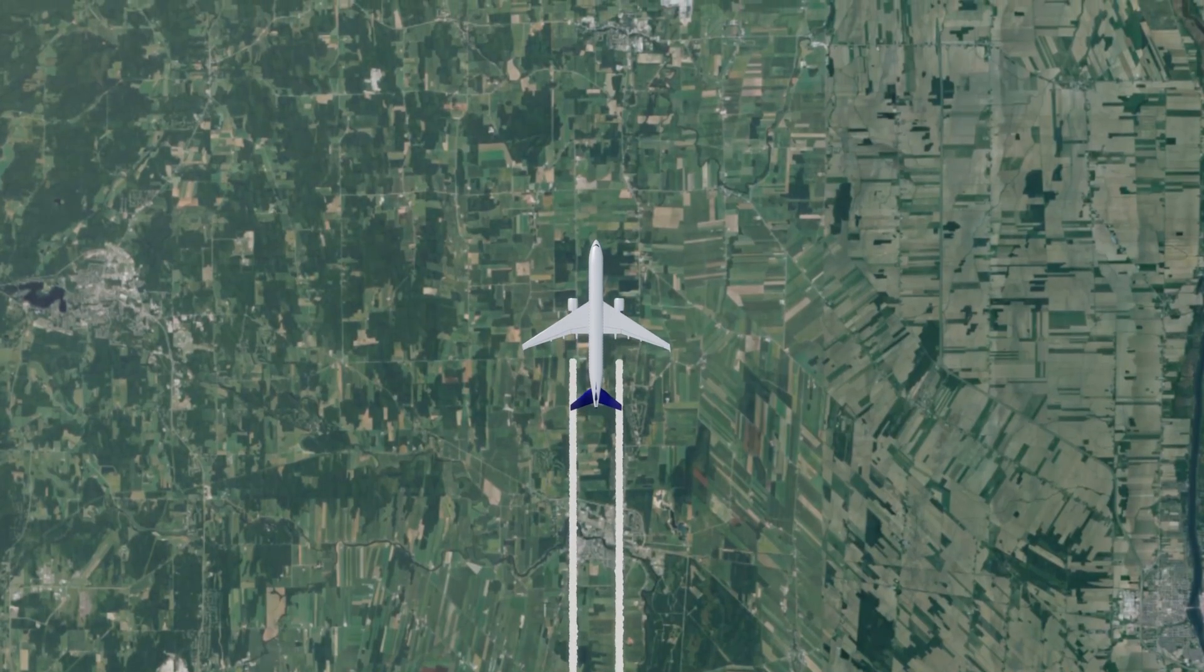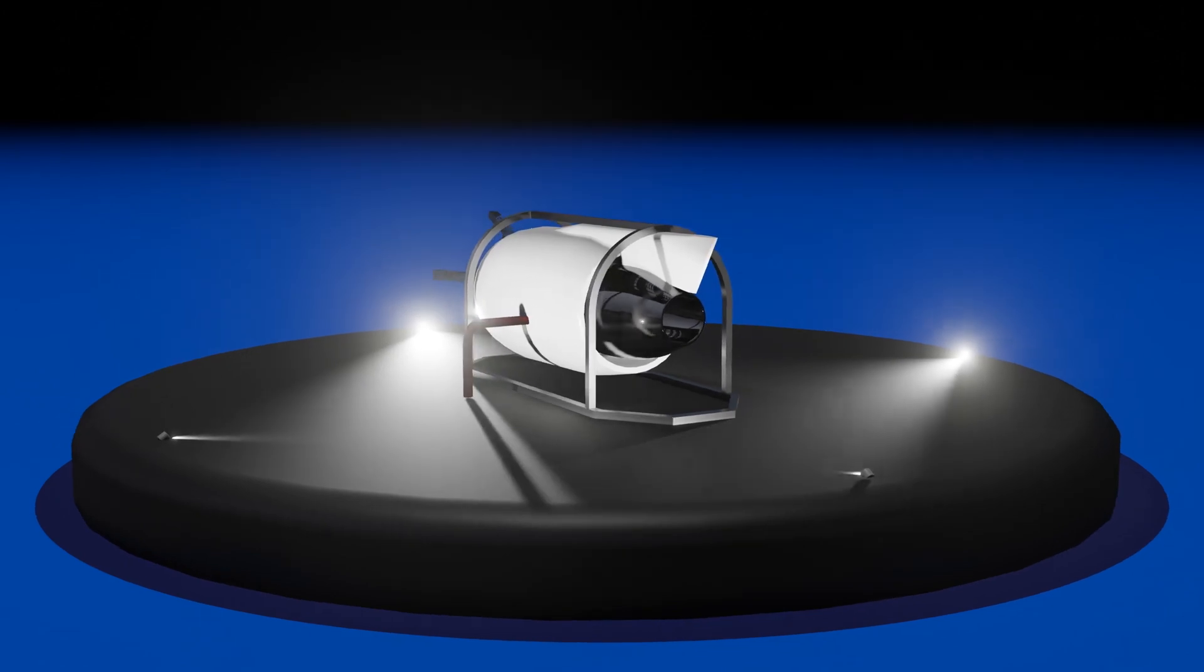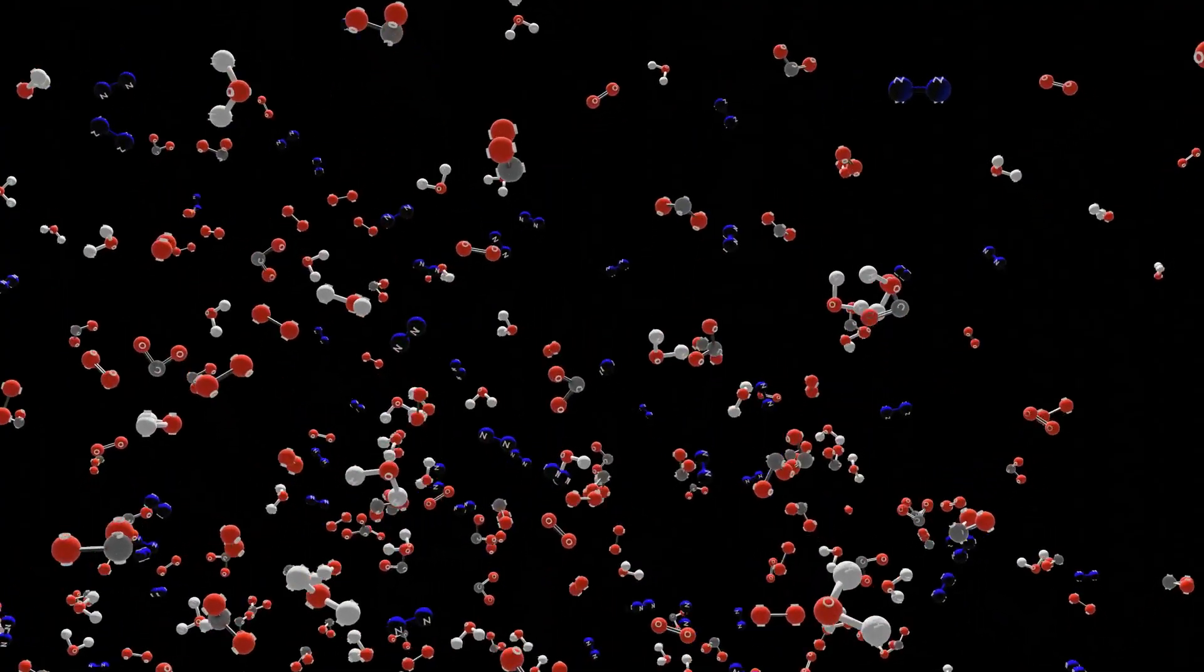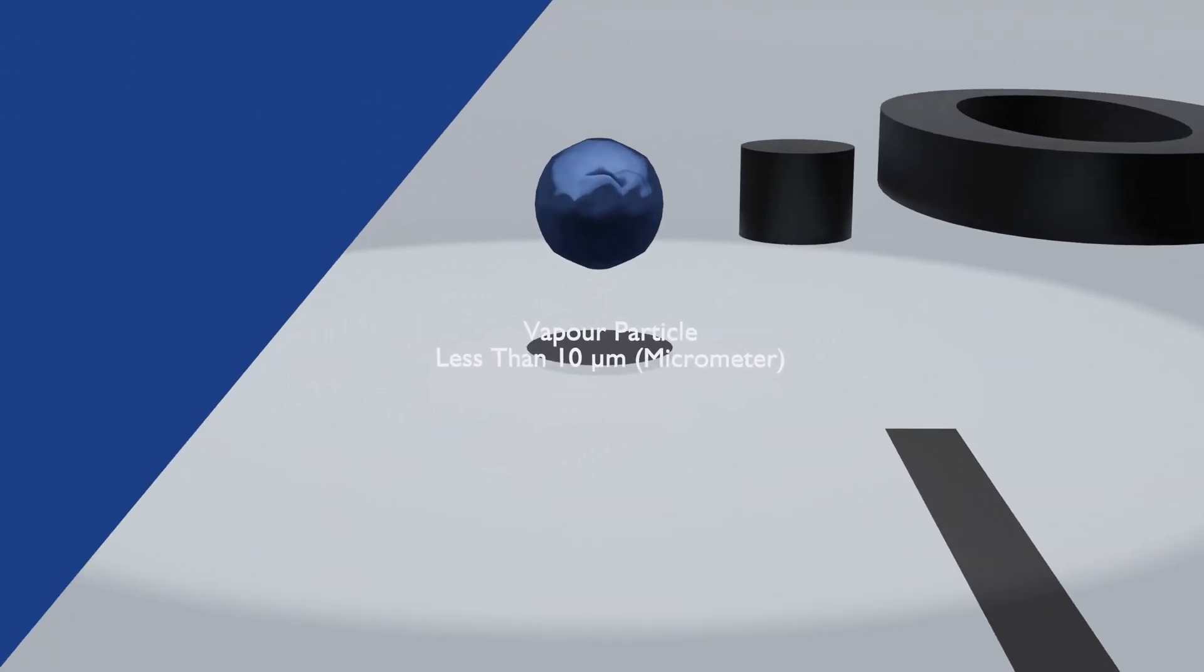In this animation, we'll learn what contrails are through reviewing what makes up a jet's exhaust, how molecules react at different temperatures, and how raindrops form.